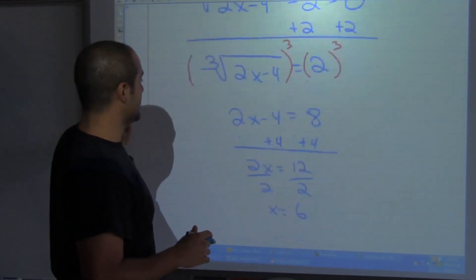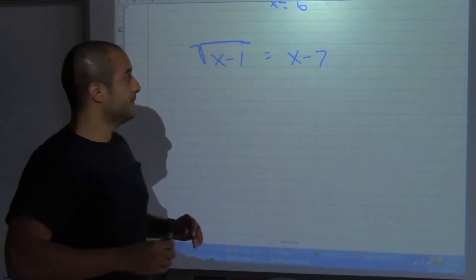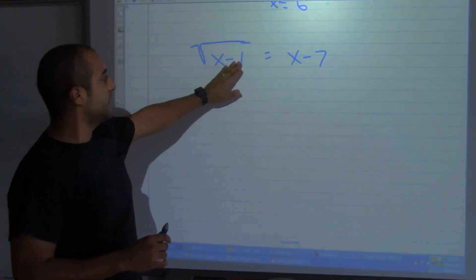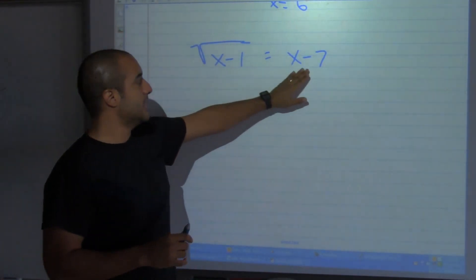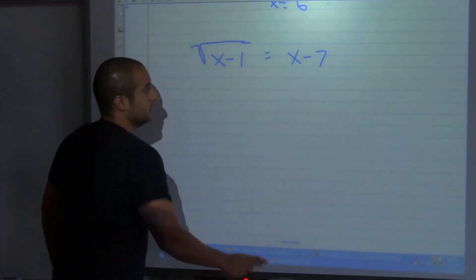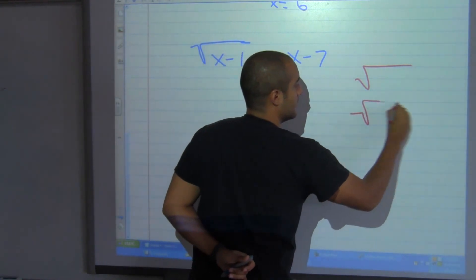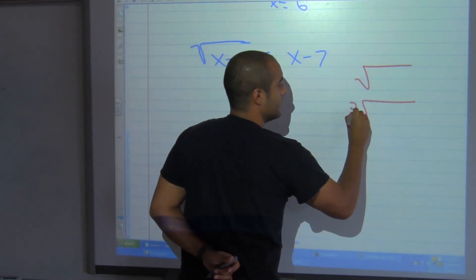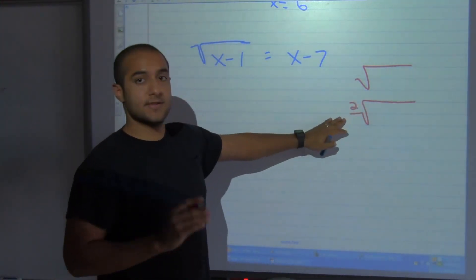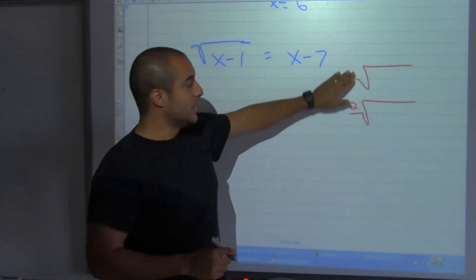My solution set is just 6. Let's try another one. This one is the square root of x minus 1 equals x minus 7. Now, these two radical symbols are the same — this means the square root. We use the square root so much that the little 2 is just not written.